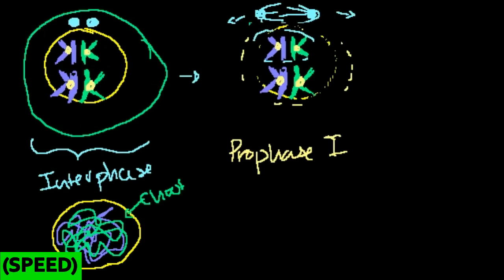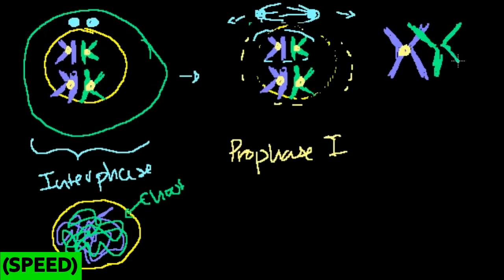What happens is crossing over — a surprisingly organized process. It crosses over at a point where for the most part you're exchanging similar genes. It's not like one chromosome is getting two versions of a gene and the other is getting none. You're exchanging in a way that both chromosomes still encode the different genes but get different versions — different alleles, which are just versions of those genes.